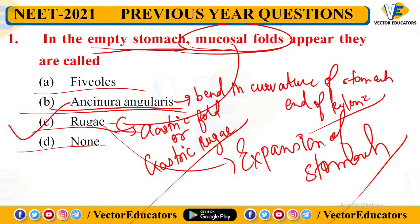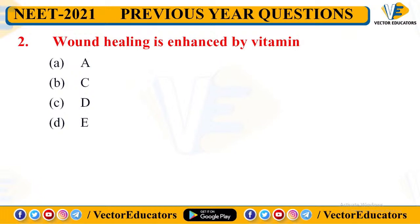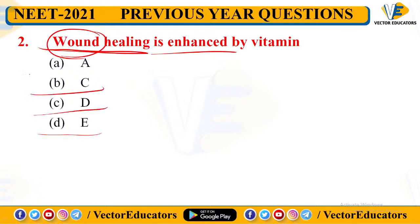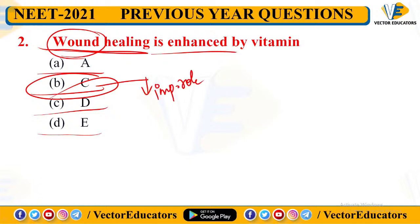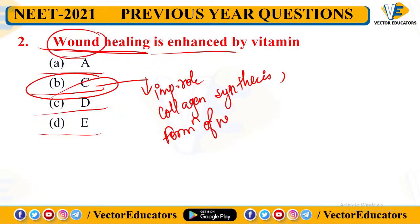Next question: wound healing is enhanced by which vitamin? So if someone has a wound or injury, which vitamin helps it heal faster? The options are Vitamin A, Vitamin C, Vitamin D, and Vitamin E. The correct answer is Vitamin C, because Vitamin C plays an important role in collagen synthesis and formation of new blood vessels.